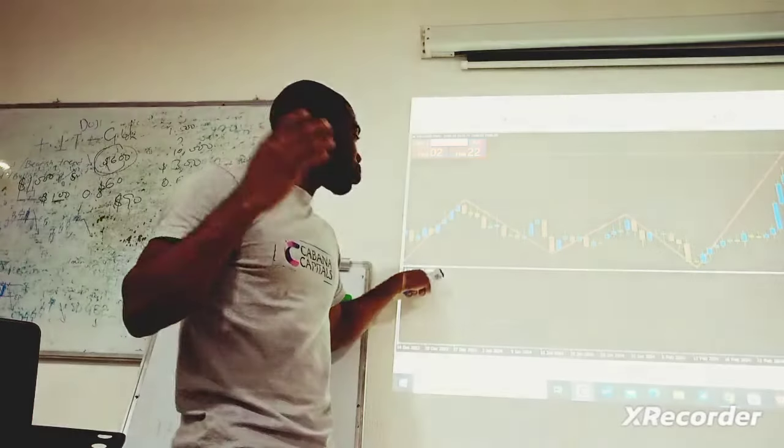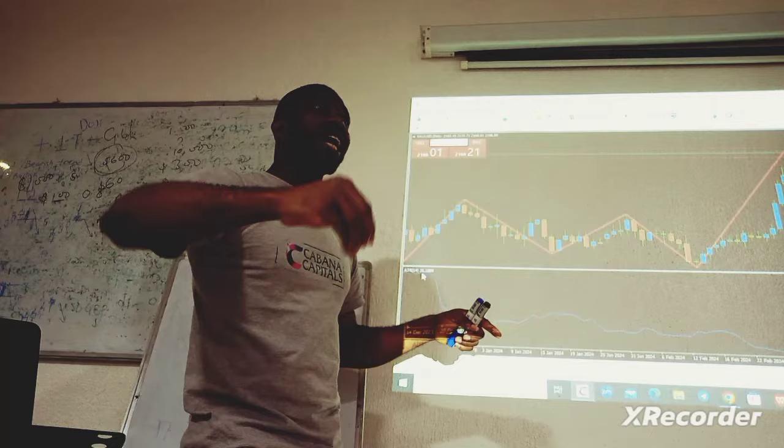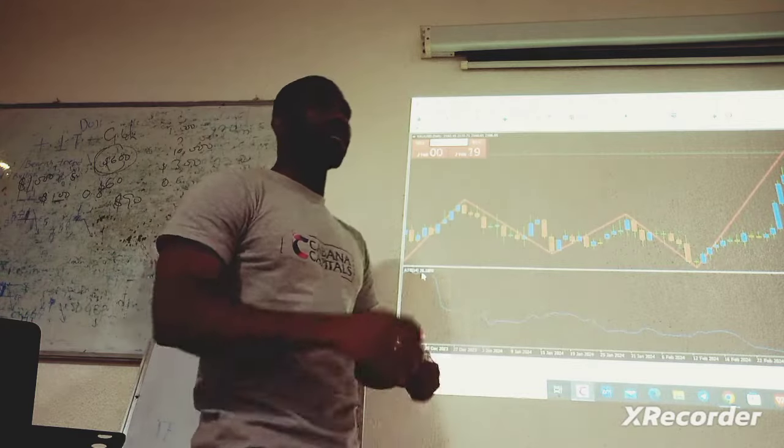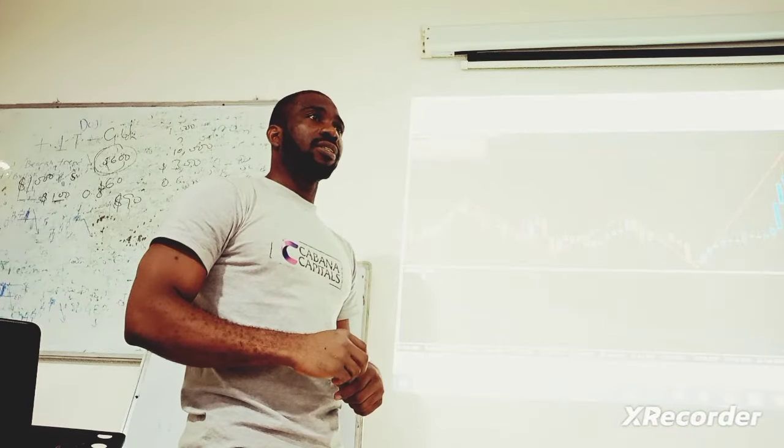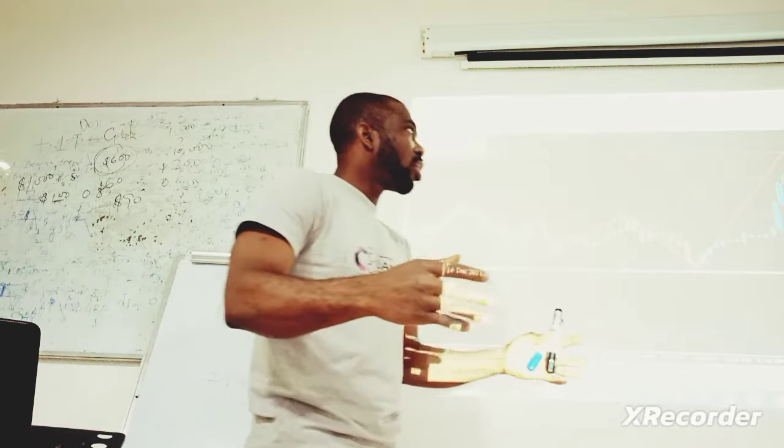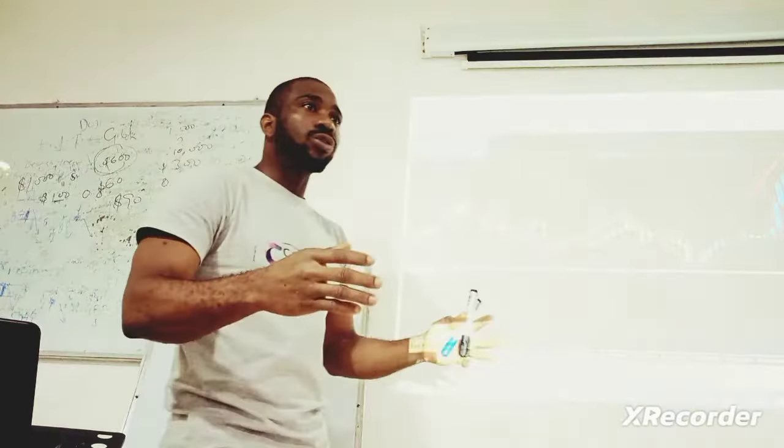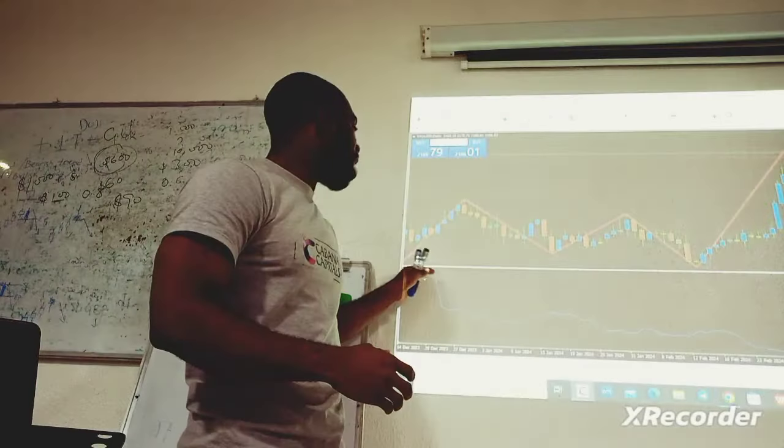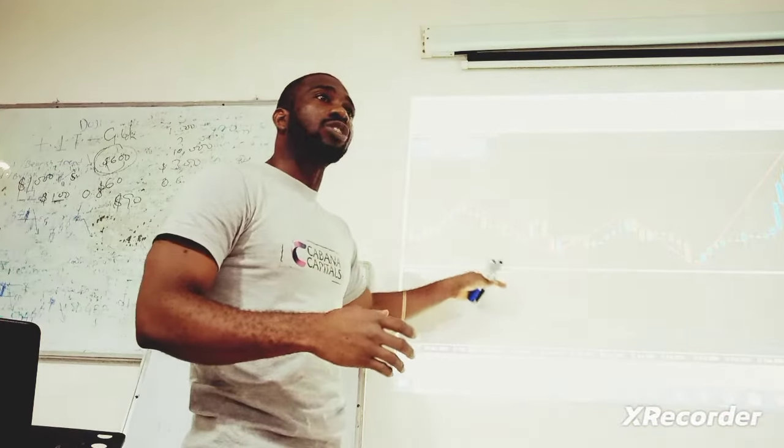So if an instrument will deliver 261, that tells you that it is very volatile. So let's assume you want to buy gold. Let's assume you want to buy gold and you know the Average True Range to be 261.